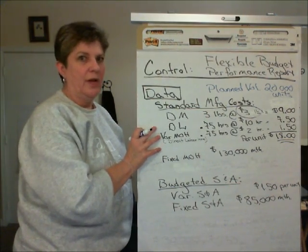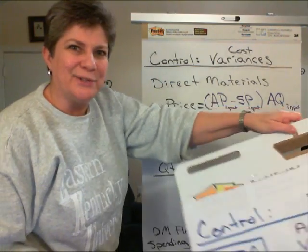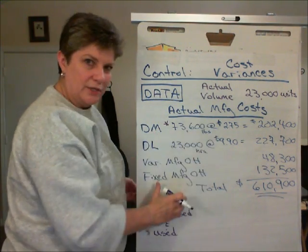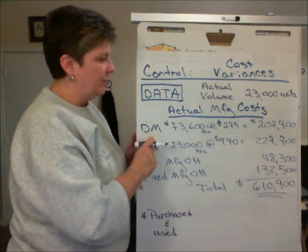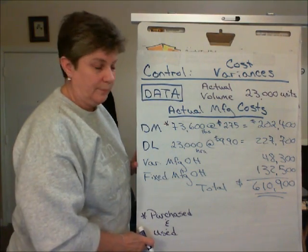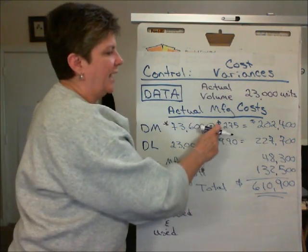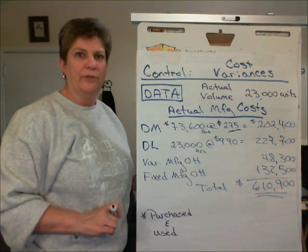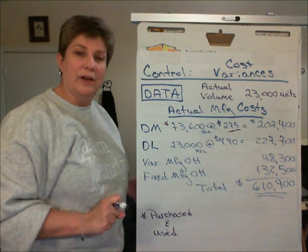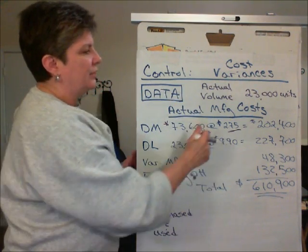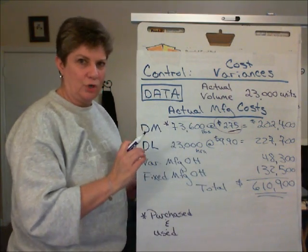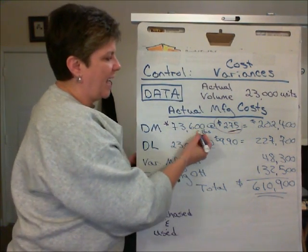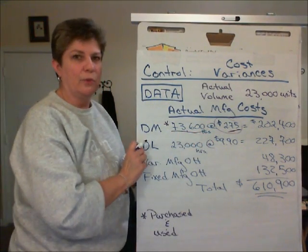But what is the actual cost of the materials? We need some more data, so I'm going to flip my chart around so we can see the rest of our data. This is our actual cost incurred, broken down by quantity and price of the input. For the materials, we purchased and used 73,600 pounds of materials, and we paid $2.75 per pound. Our actual standard cost was $3 per pound, and our actual cost was $2.75.